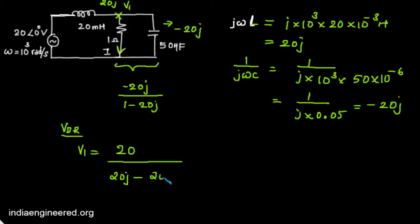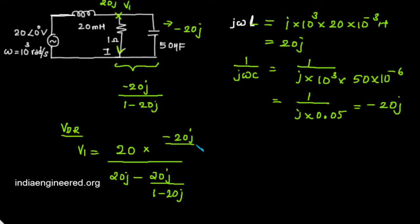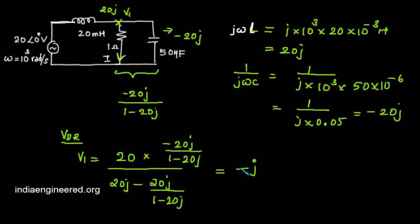Actually this will come as negative: -20j/(1 - 20j) into this resistance that is -20j/(1 - 20j). In solving this we will get, we can solve this expression using the calculator, and we will get it as -j.